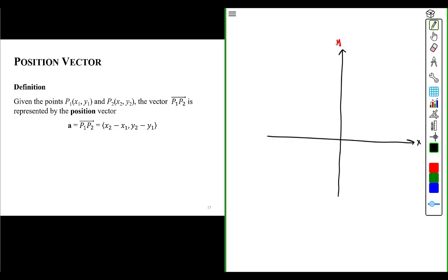So let's look at two points in space. We will say point P1 is at coordinates x1, y1. And we will say point P2 is at coordinate x2, y2. Let's suppose that vector A is the vector that connects points P1 and P2.